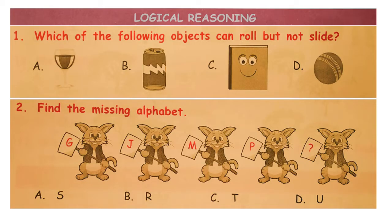Let's start with logical reasoning. First question is: which of the following objects can roll but not slide? Answer is option D, that is ball. Ball can roll but not slide.